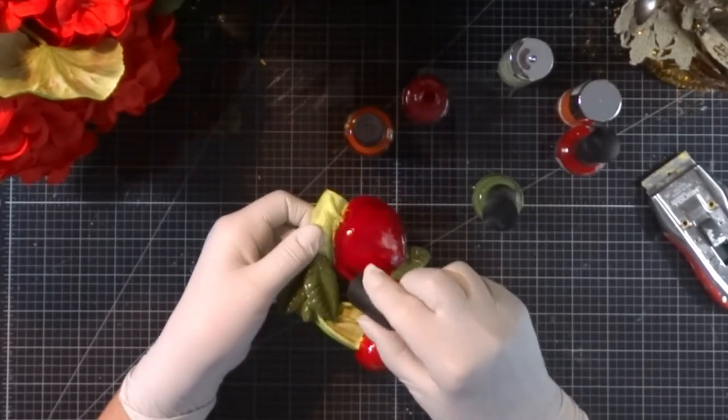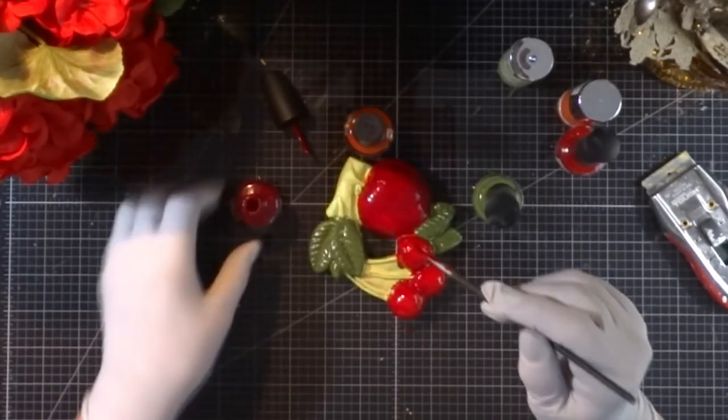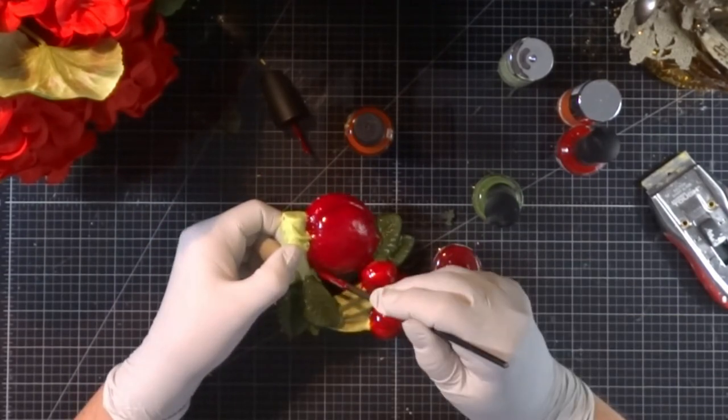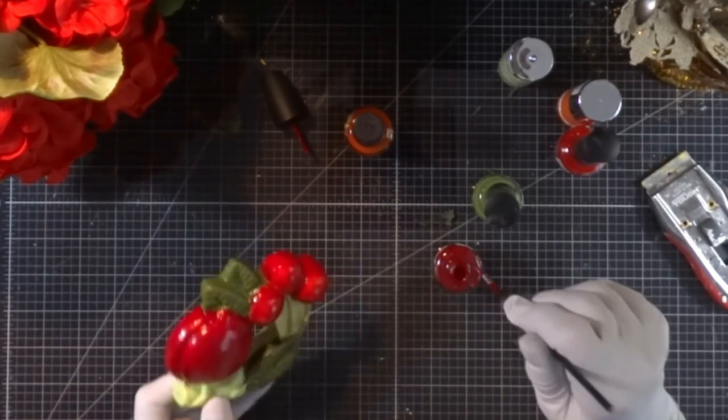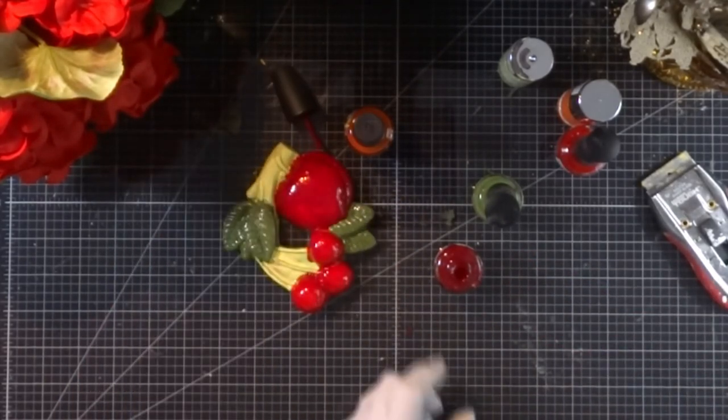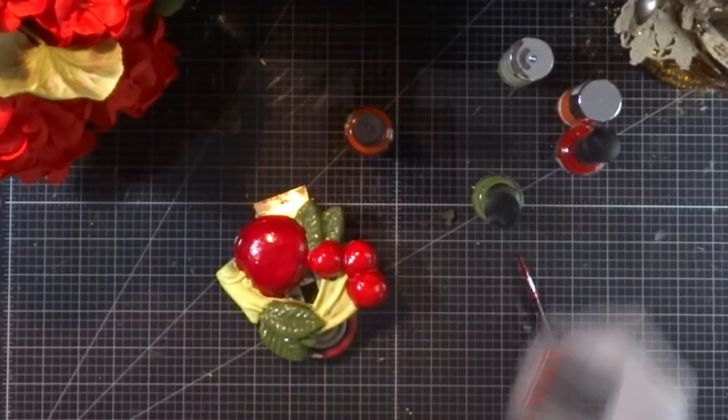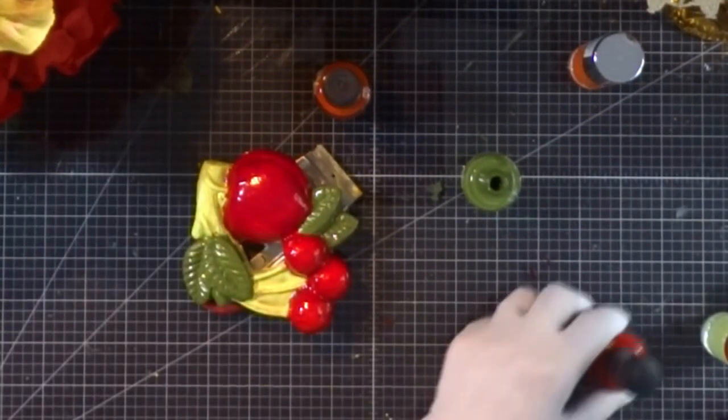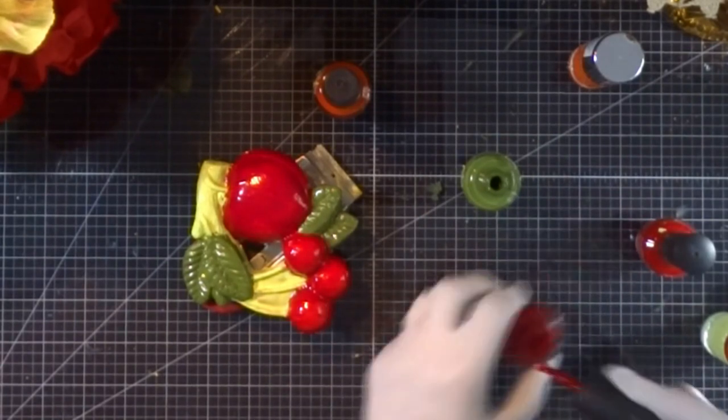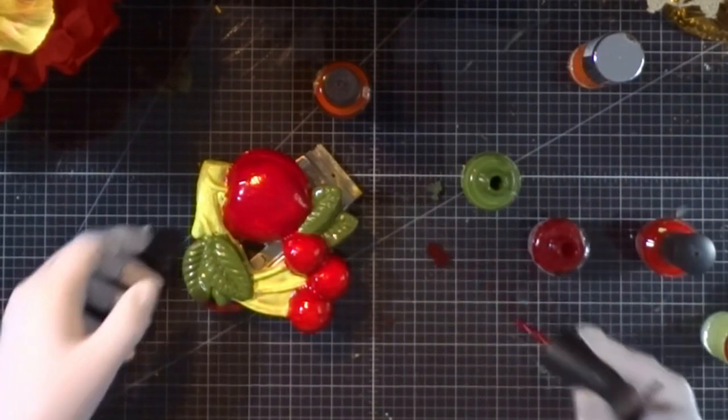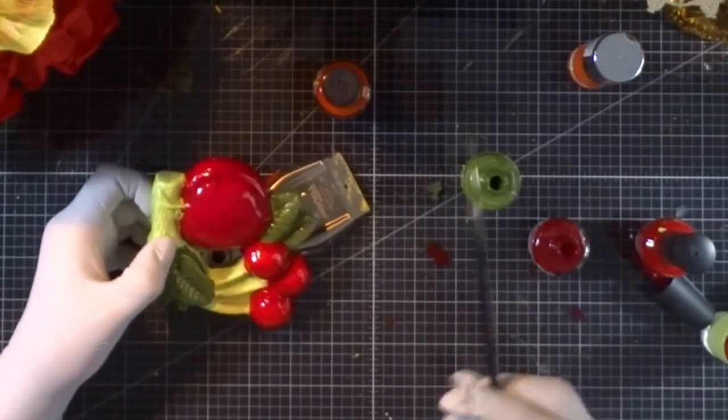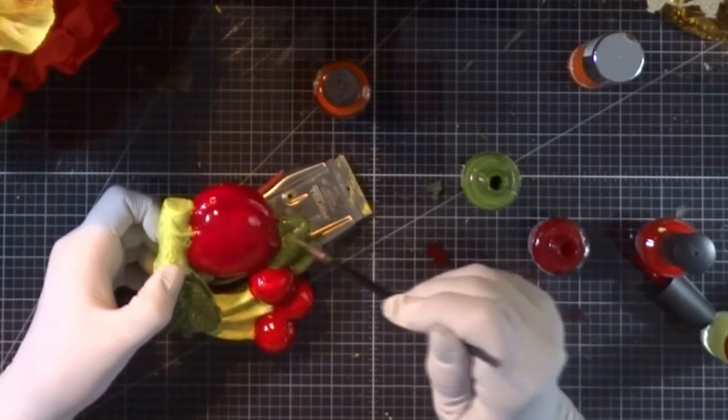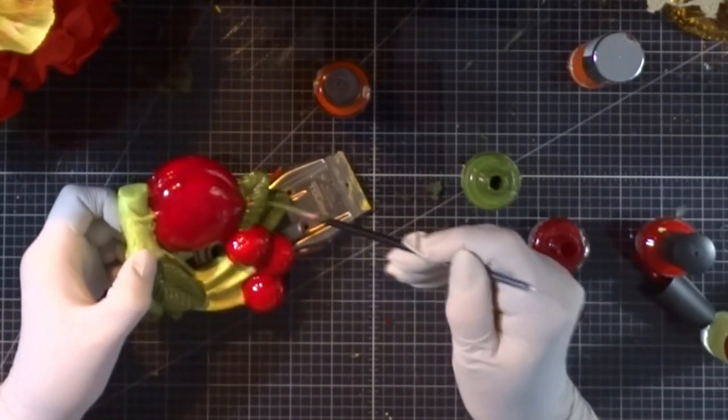As the lacquer dries you can do a little bit of touch-up as you go along. What I'm doing here is I'm mixing the green with some of the red to give it that natural sun-kissed redness that some leaves have.